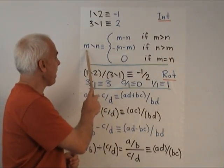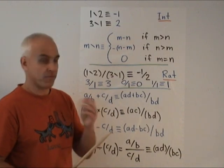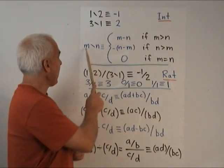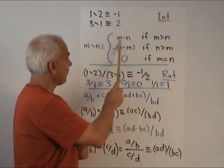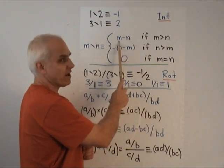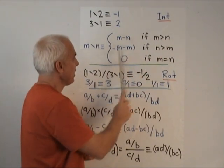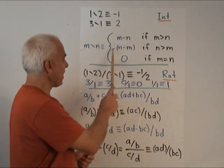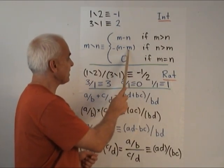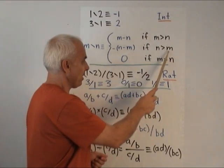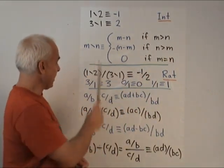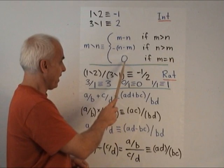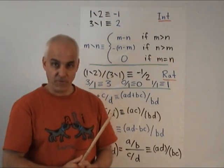More generally, if we have M less N, then there are three possibilities. If M is bigger than N, then this is equal to M minus N. If N is bigger than M, then we'll get what is usually called a negative number. We'll write it as minus N minus M. And if M and N are equal, then we'll just use the symbol 0.